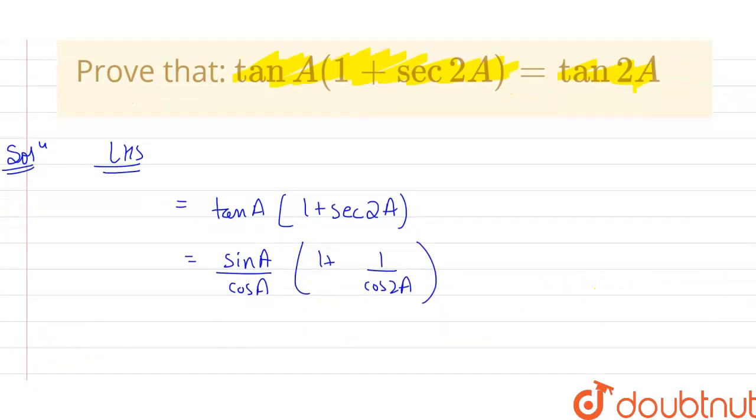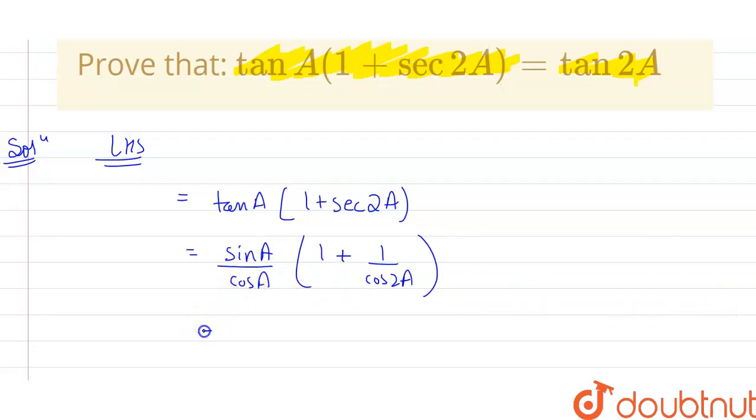So after this I can write here that if I multiply or if first further what I'll do, I'll take LCM. So first of all, sin A by cos A. Let's take LCM. So this will become cos of 2A, or I can say 1 plus cos 2A.